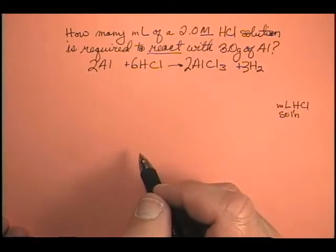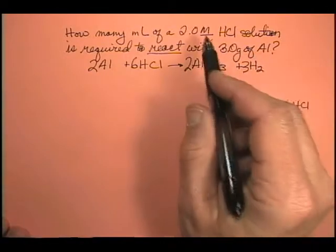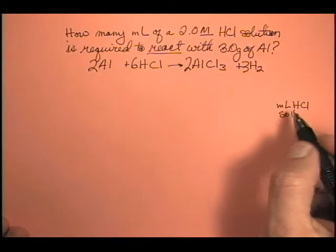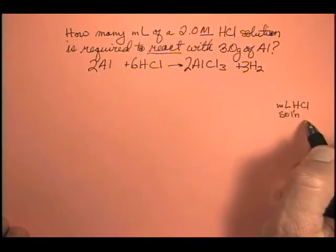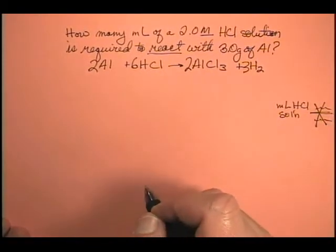So where are we going to start? Well, we have two possible places, 3 grams of aluminum and 2.0 molar. Well, if we use our rule of thumb, this is not something per something. It's not that. So we're not going to start with something per something.